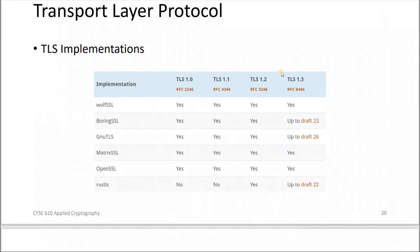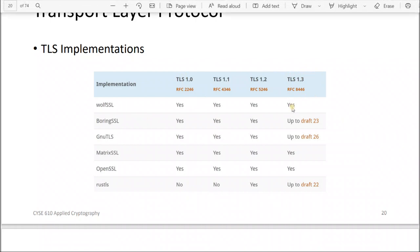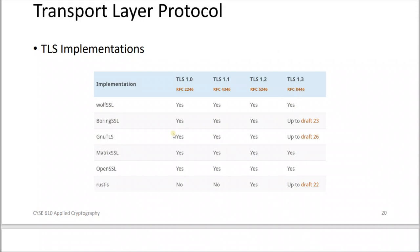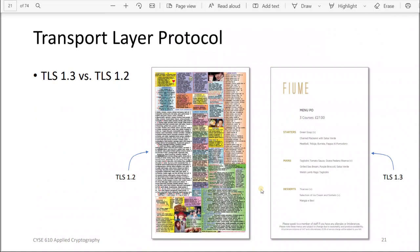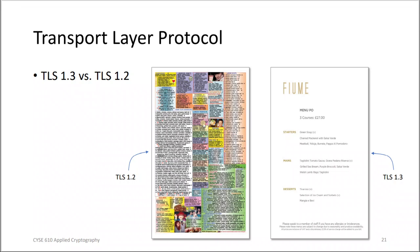In terms of implementation and support, WolfSSL supports TLS 1.3, MatrixSSL is widely used, and OpenSSL supports up to various versions. This is how we compare the old TLS 1.2 and the new TLS 1.3.